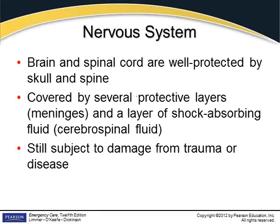The nervous system consists of the brain and spinal cord, which are fairly well protected by the spinal column and the skull. They're covered by several protective layers called the meninges — three layers thick — and then there's a layer of shock-absorbing fluid called cerebral spinal fluid, or CSF, all trying to protect those very delicate nerves.